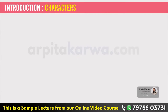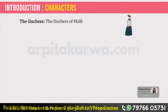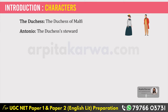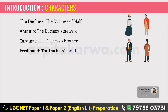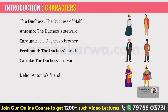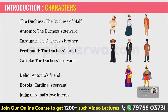Let's look at the characters. The first character is the Duchess of Malfi. She has a steward called Antonio. The Duchess has two brothers, Cardinal and Ferdinand. Cariola is the Duchess's servant. Delio is Antonio's friend, Bosola is Cardinal's servant, and Julia is Cardinal's love interest.